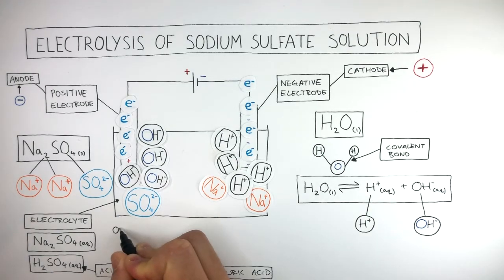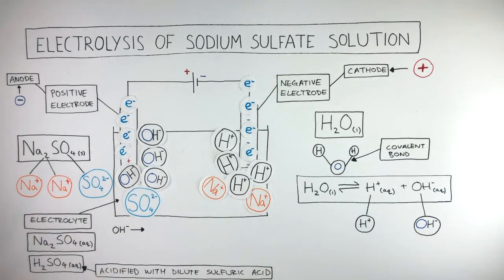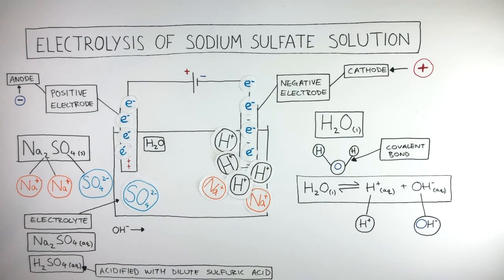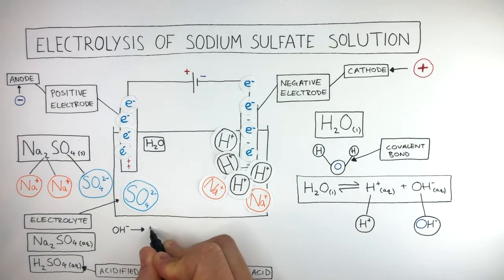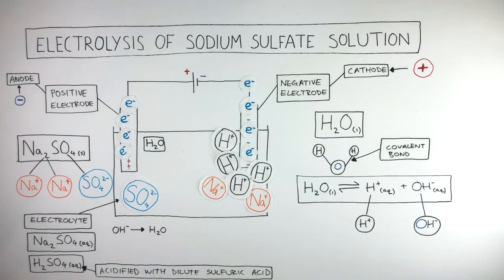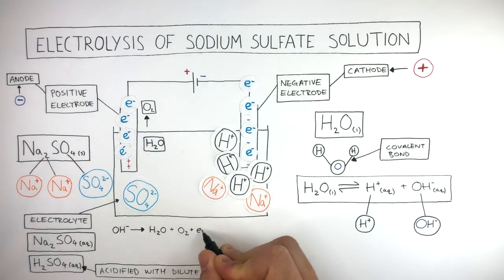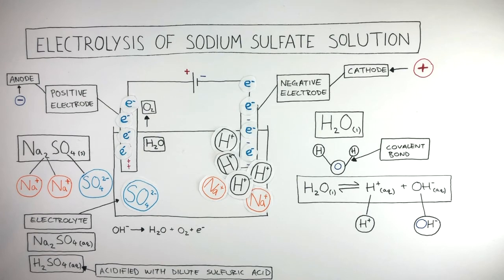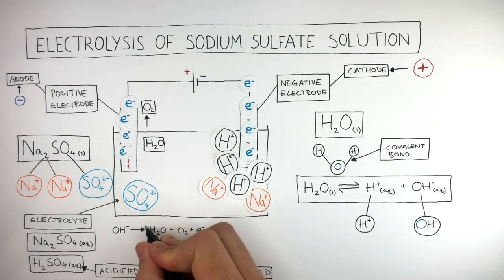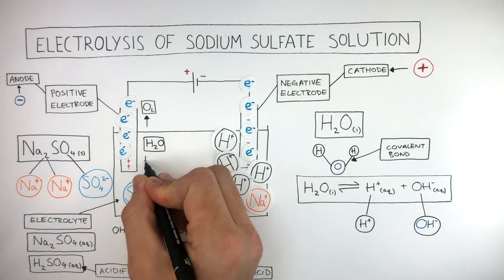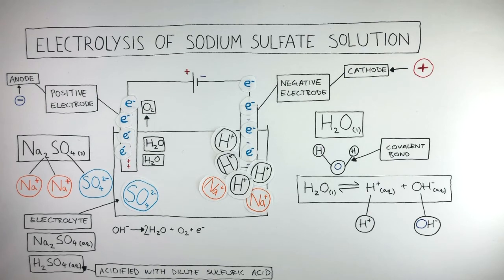We can explain what's happening at the anode using a half equation. To begin with we write OH-. When the hydroxide anions lose one electron at the anode, water is formed, so we write the product H2O. Oxygen gas is also formed, so we write O2 as another product. As electrons have been lost at the anode, we show this by writing plus e-. To balance this half equation we put a 2 in front of the H2O, giving two molecules of water produced.